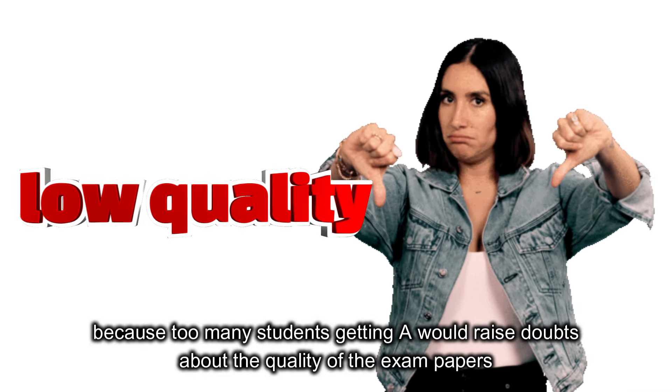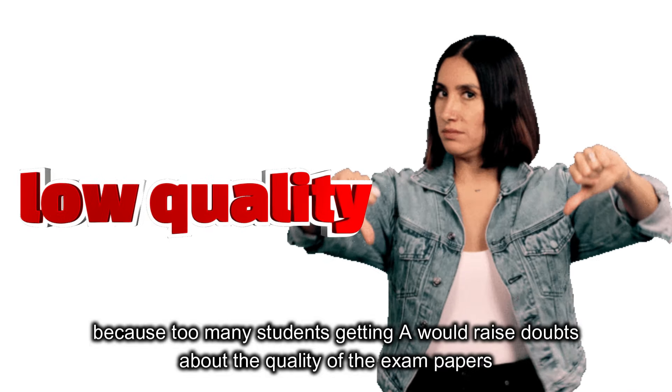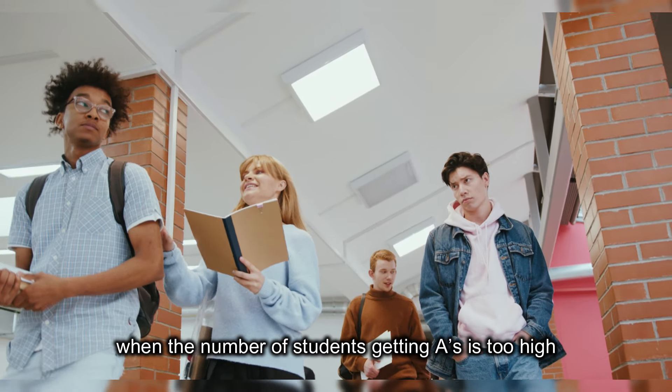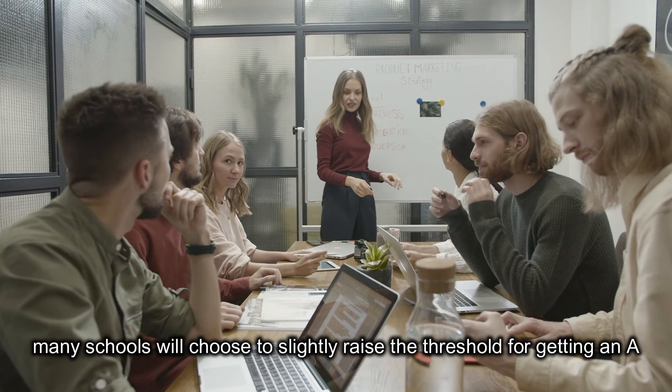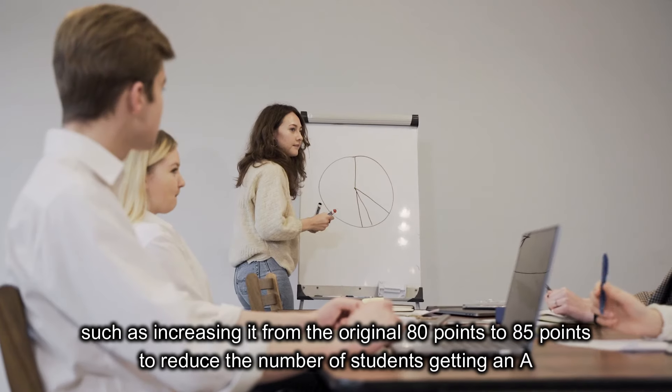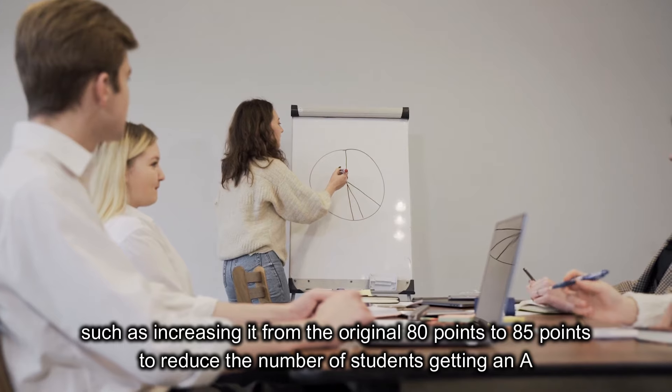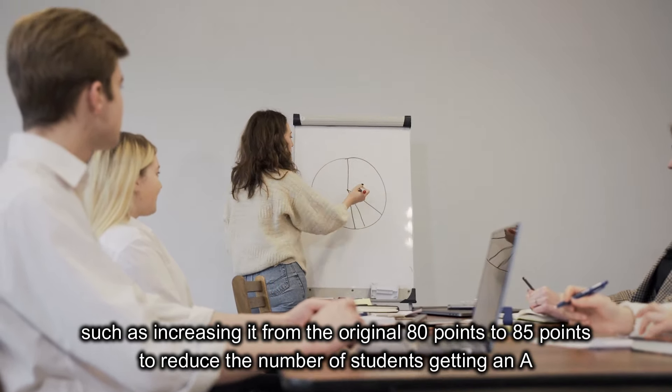Because too many students getting A would raise doubts about the quality of the exam papers. When the number of students getting A's is too high, many schools will choose to slightly raise the threshold for getting an A, such as increasing it from the original 80 points to 85 points to reduce the number of students getting an A.